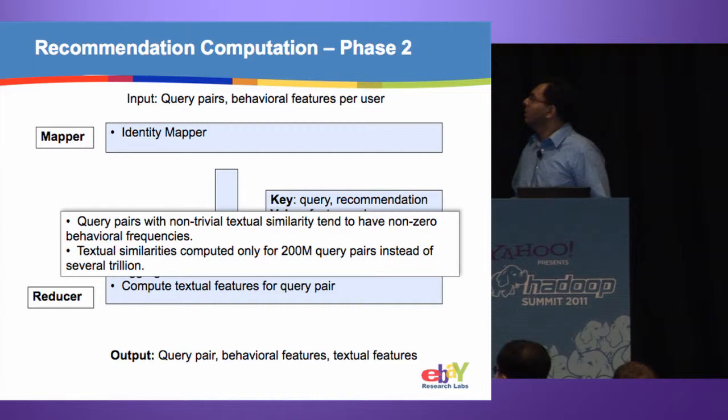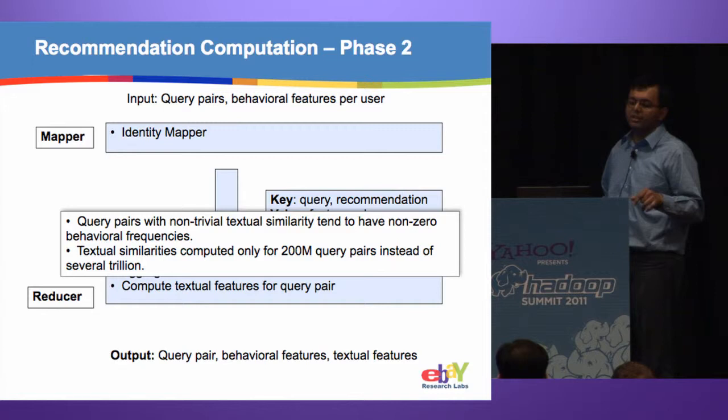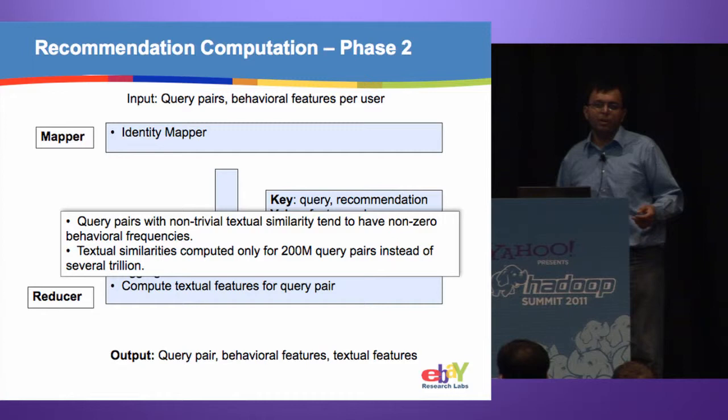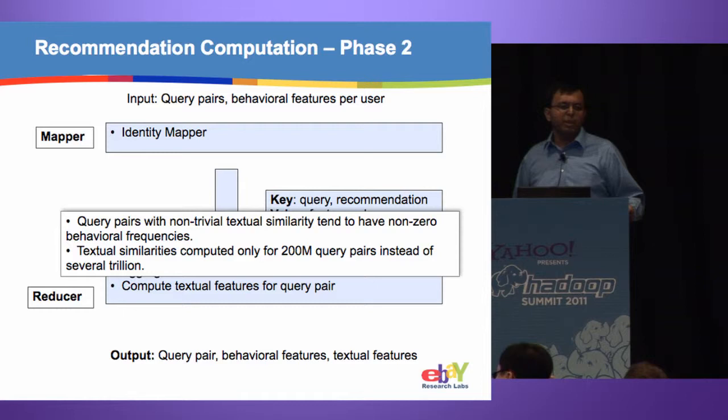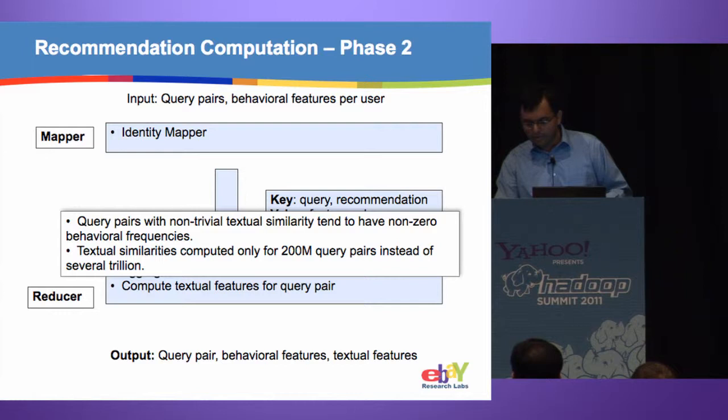At the end of the second MapReduce job, we have all the query pairs we want to use as recommendations with their associated scores — essentially a recommendation index. Once compiled, this information can be used on the eBay site to serve recommendations, like those shown below the search box.